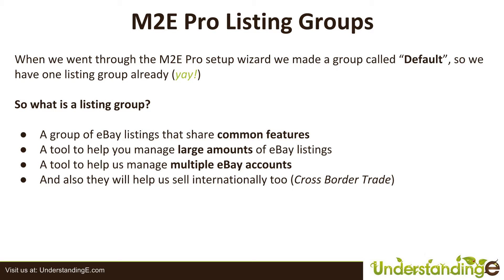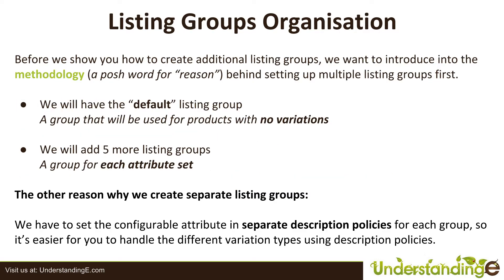The last benefit is almost a spin-off of that: it allows you to sell on international eBay sites too, so cross-border trade opens up massively. When it comes to listing groups, we felt it was important to explain the reasoning behind setting up multiple listing groups first. We already have a default listing group in our system, and that's the group which we suggest you use for products which have no variations — so if you're selling a keyboard that doesn't come in any variations, you put that product into the default listing group.